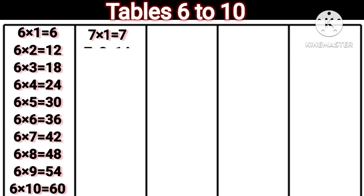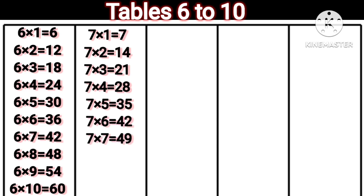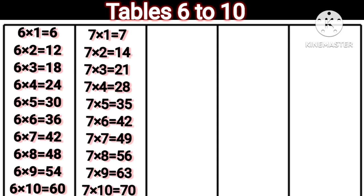7 1s are 7. 7 2s are 14. 7 3s are 21. 7 4s are 28. 7 5s are 35. 7 6s are 42. 7 7s are 49. 7 8s are 56. 7 9s are 63. 7 10s are 70.